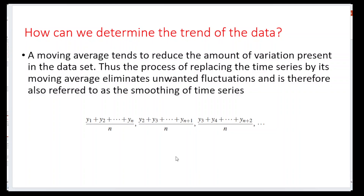To determine trends and eliminate unwanted fluctuations in data, we can calculate moving averages. Moving averages tend to reduce the amount of variation present in the dataset. The process of replacing the time series by its moving average eliminates the unwanted fluctuations and is referred to as smoothing of the time series data. The empirical equations are: (y1 + y2 + ... + yn) / n, then (y2 + y3 + ... + y(n+1)) / n, and (y3 + y4 + ... + y(n+2)) / n.